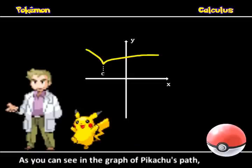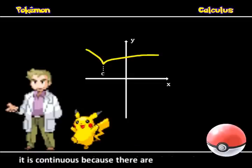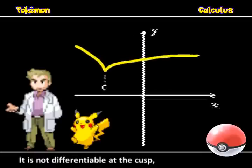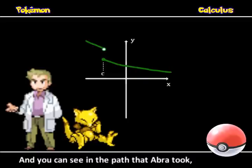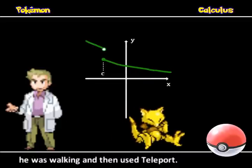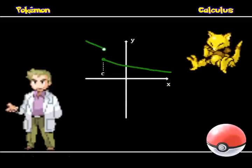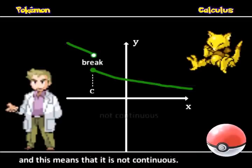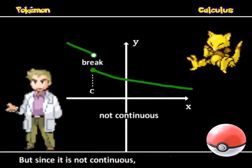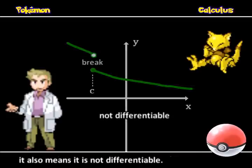As you can see in the graph of Pikachu's path, it is continuous because there are no breaks in the line, but it is not differentiable at the cusps, which are the jagged points on the graph. And you can see in the path that Abra took, he was walking and then used Teleport. There is a break in the line, which means that it is not continuous — and since it's not continuous, it also means it is not differentiable.